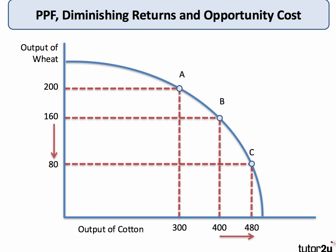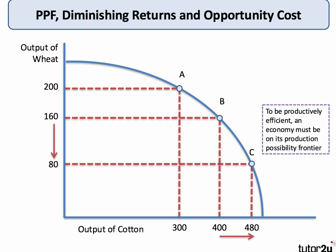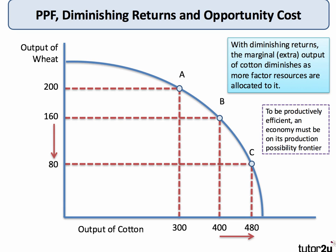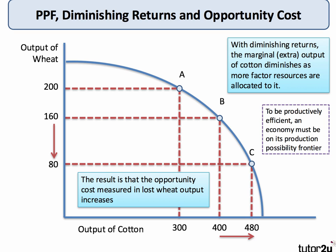However, the shape of the PPF is important — the curve is there to illustrate diminishing returns. With diminishing returns, the marginal extra output of cotton goes down as more resources are allocated to it. As we go from A to B to C, output of cotton goes from 300 to 400, but then only from 400 to 480 — it's becoming harder to increase cotton output. To get there, we're having to sacrifice more units of wheat, so the opportunity cost measured in lost wheat output increases. Diminishing returns help explain the shape of the production possibility frontier.